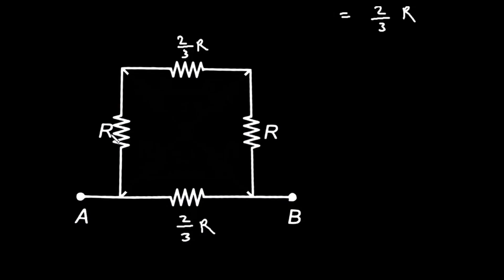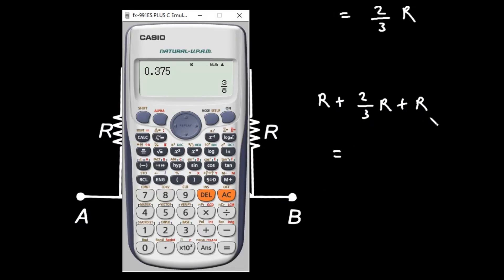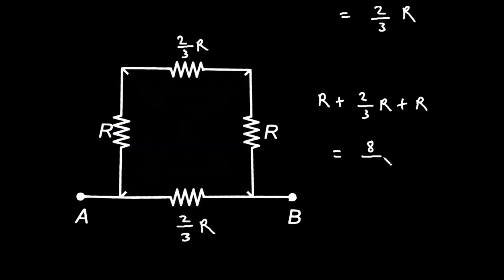Now here we can see this R, this 2/3 R, and this R — they are connected in series. So it will be R + 2/3 R + R. That gives 2R plus 2/3, so 2 + 2/3 = 8/3. So the result is 8/3 R. We can replace these three resistances by 8/3 R.